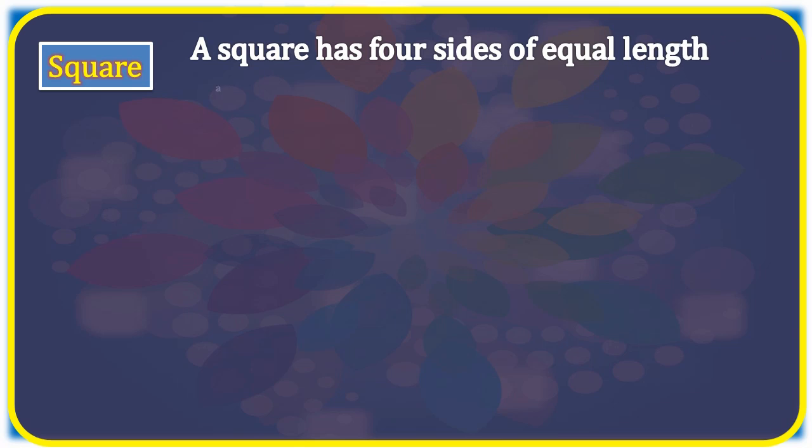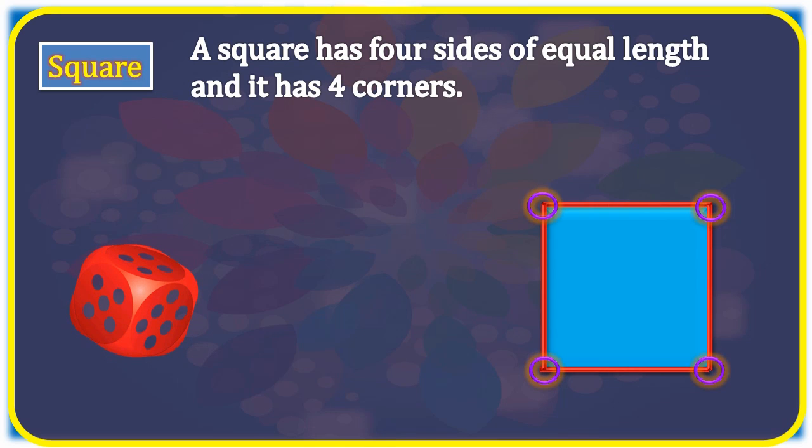Square. A square has four sides of equal length and it has four corners. Here, the dice is in the form of square.